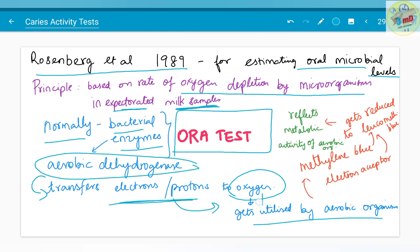This oxygen will get utilized by aerobic organisms, but in the presence of aerobic organisms the electron is accepted by methylene blue and it gets reduced to leukomethylene blue, and it reflects the activity of aerobic organisms.